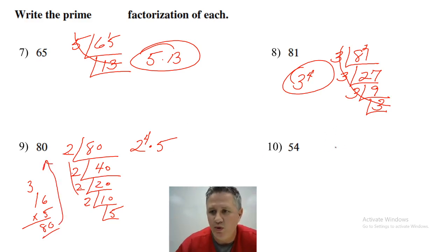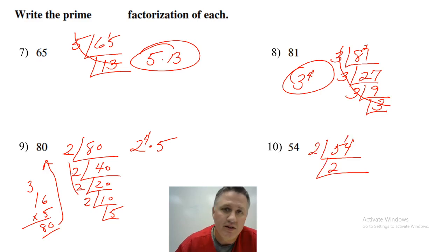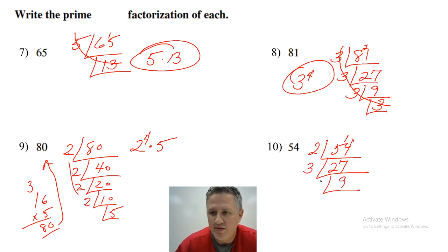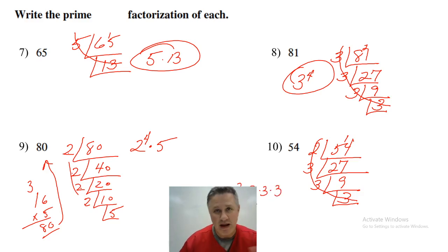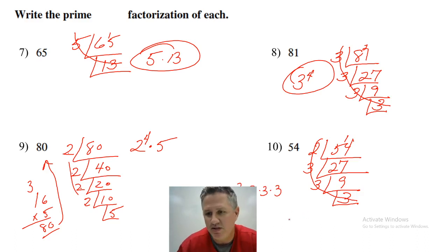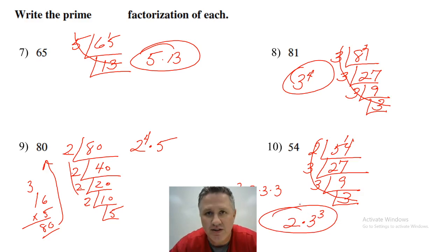Let's break down 54. Two goes into 54 — two goes into 14 seven times, giving 27. Then three goes into 27 nine times, and three goes into 9 three times. You wind up with 2 × 3 × 3 × 3 in expanded form. Written in exponential form, that's 2 × 3³.